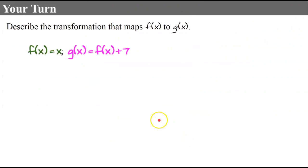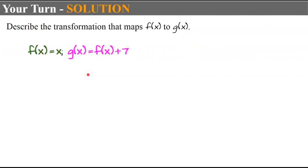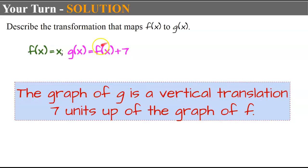Your turn — no graphing needed this time. Look at function F and function G and tell me what transformation describes the mapping. This is happening to our output, so the graph of G is a vertical translation 7 units up of the graph of F.